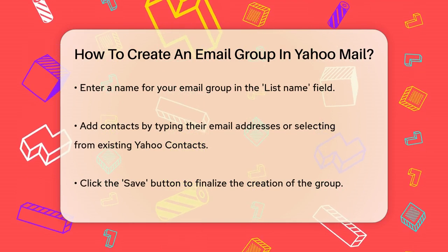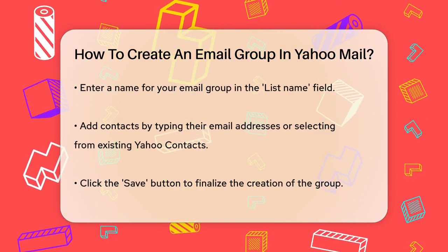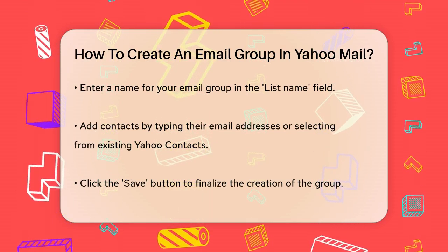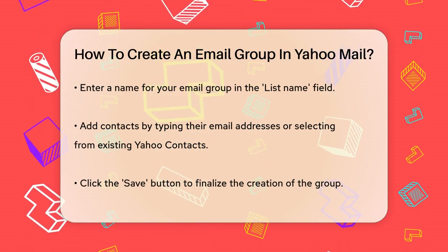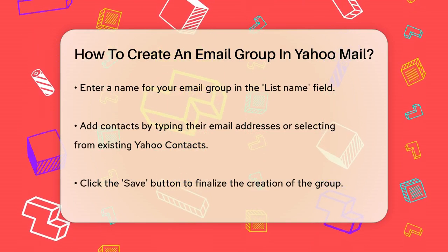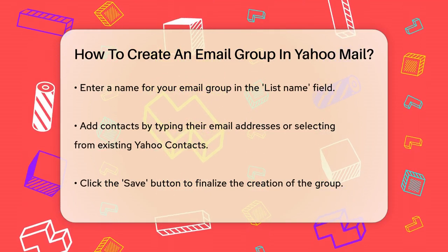Now, you need to give your email group a name. Enter a name for your email group in the List Name field. This could be something like Family Updates or Work Team.